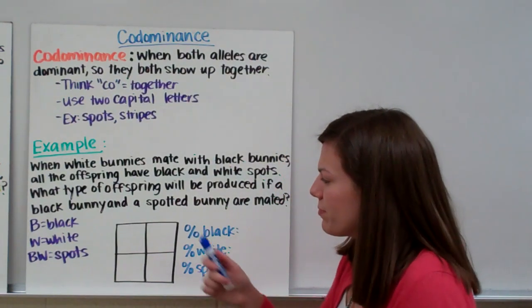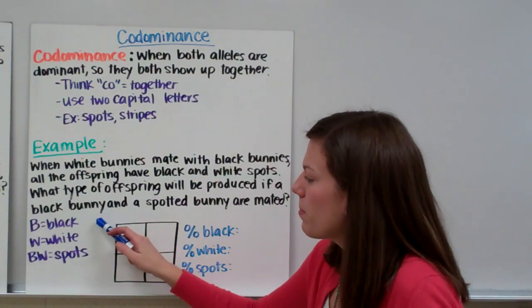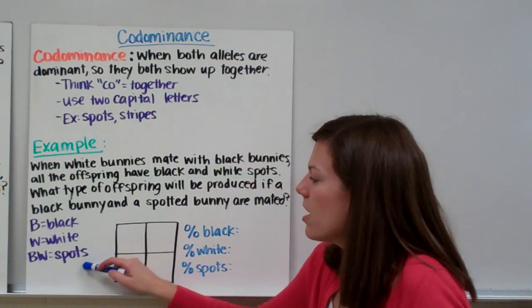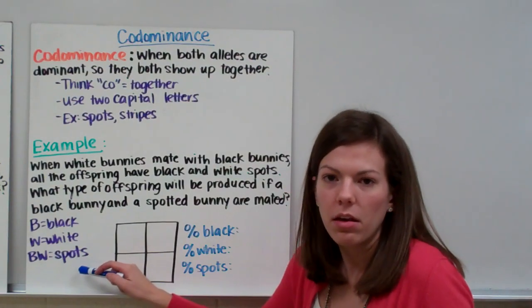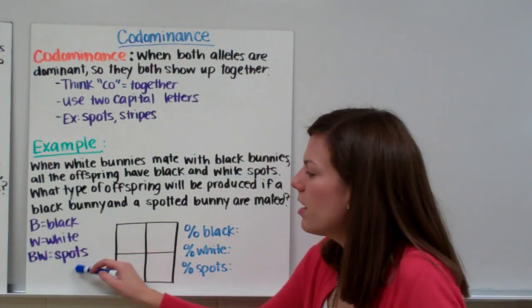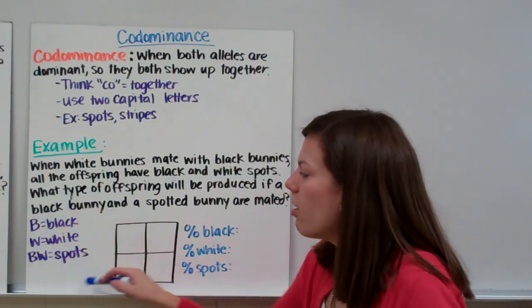First we need to assign alleles to our different phenotypes. The two alleles that we're starting with are black and white. We don't need to use a different letter like S for spots because spots are made up of black and white. We're going to use B for black, W for white, and BW for spots, and these are all capital letters.